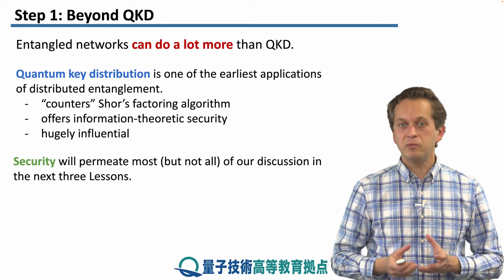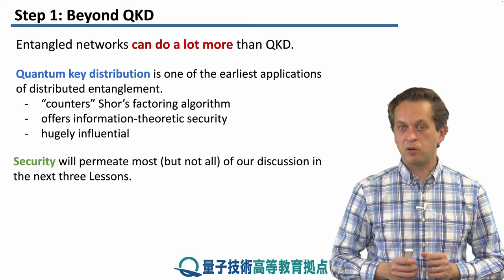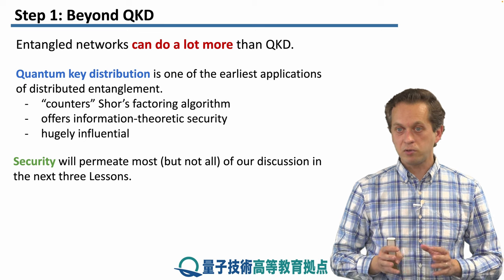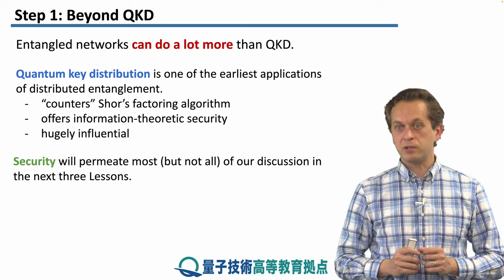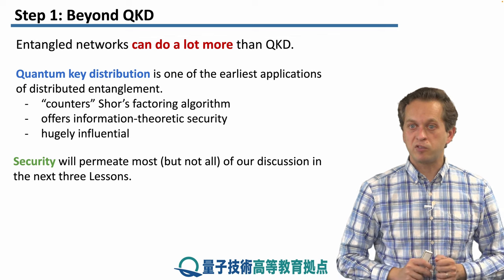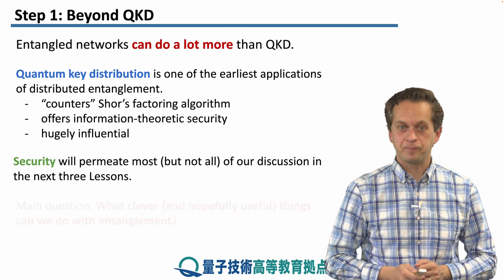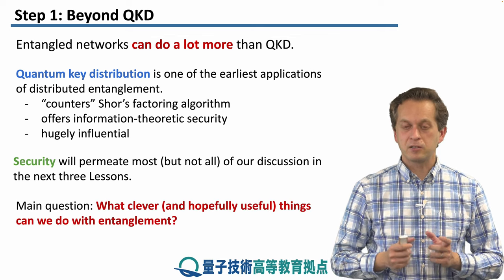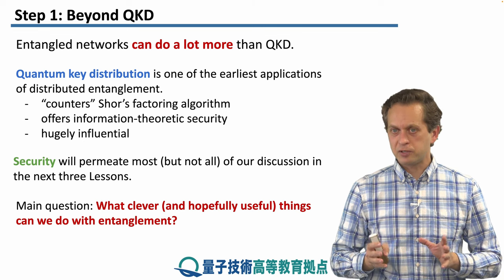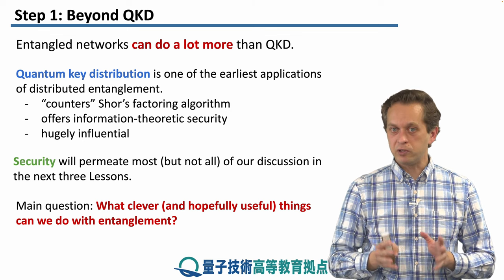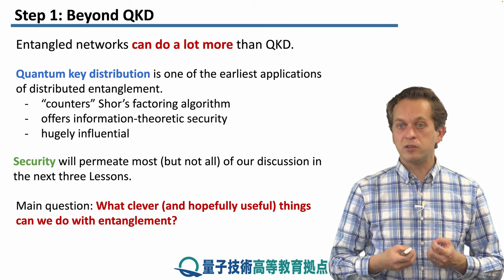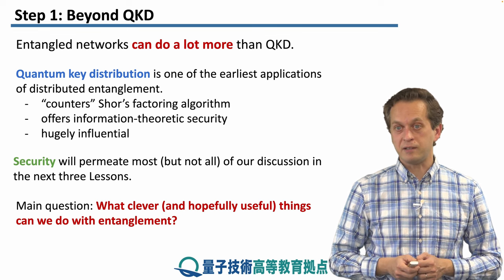Security will permeate most — but not all — of our discussion in the next three lessons. Most of the applications we are going to discuss will have some element of security or privacy in them. The main question we are asking is: what are clever, and hopefully useful, ways we can think of that use distributed entanglement?